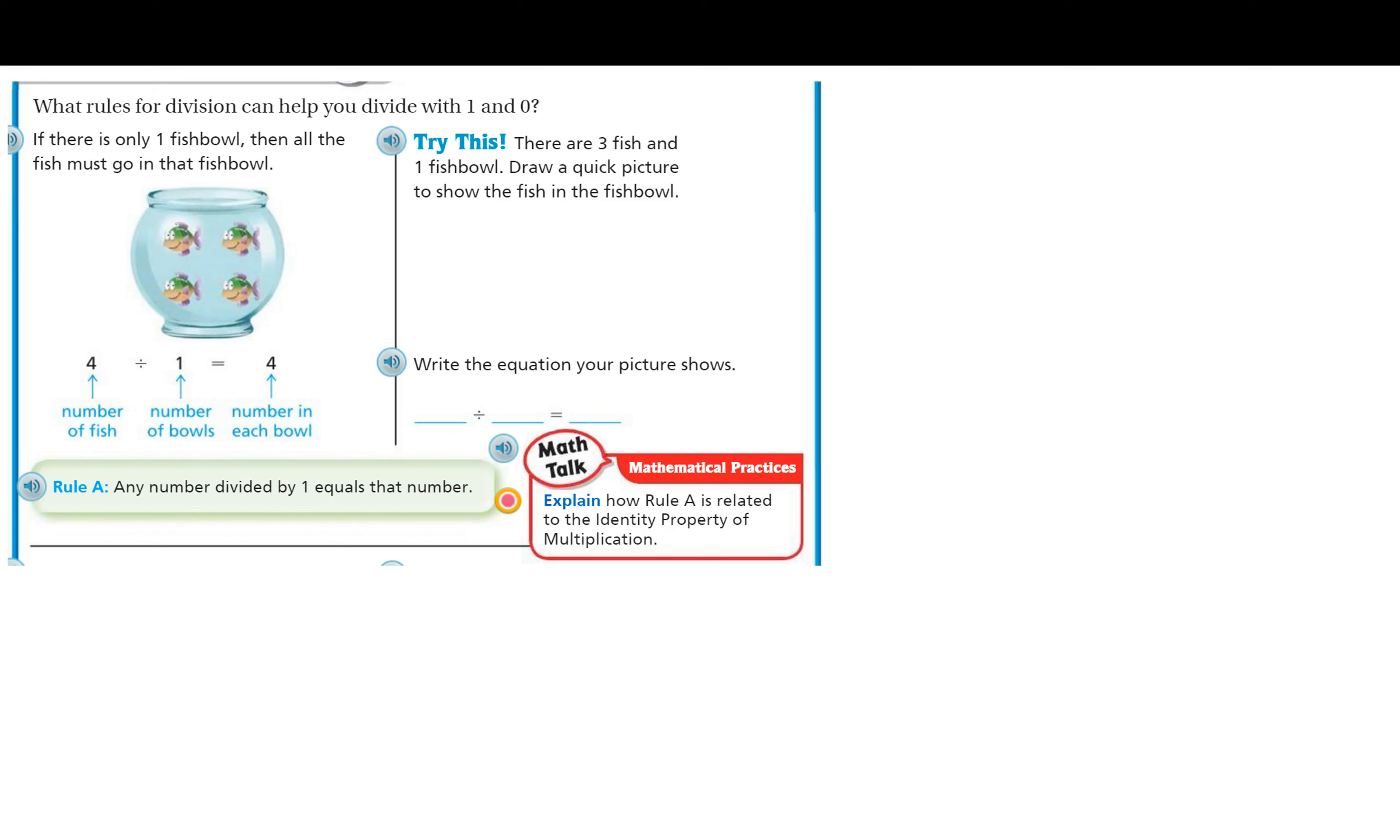Okay, so let's take a look at this first one. It says, what rules for division can help you divide with 1 and 0? So let's look at this first problem. It says, if there is only one fishbowl, and here they're showing us our one fishbowl, then all the fish must go in that fishbowl.